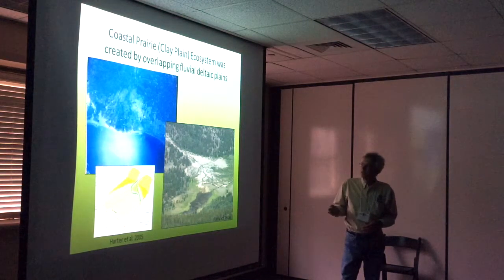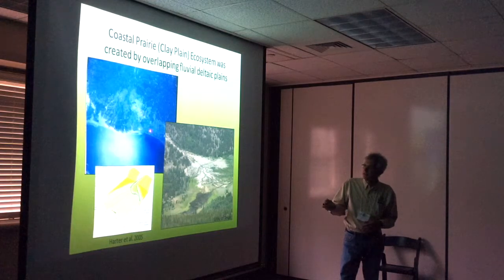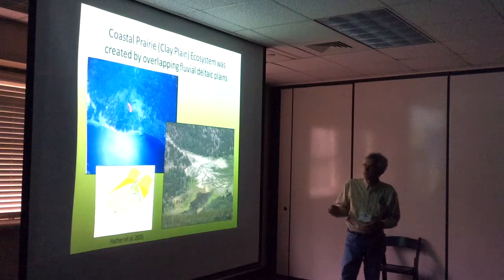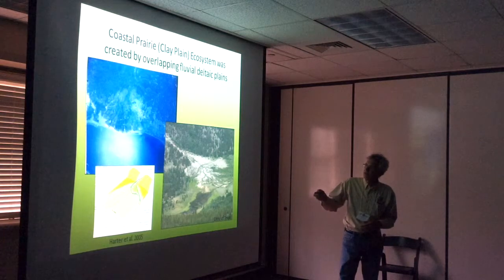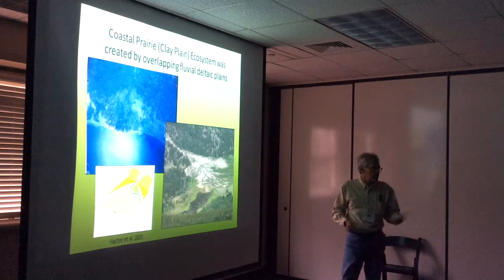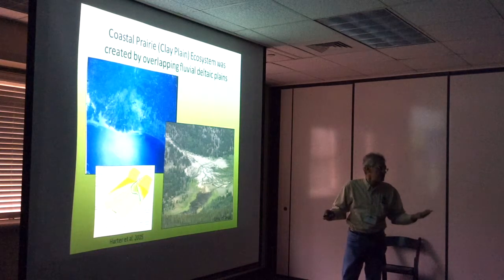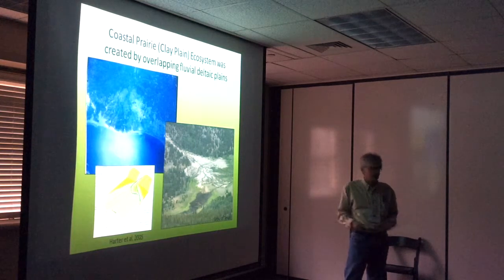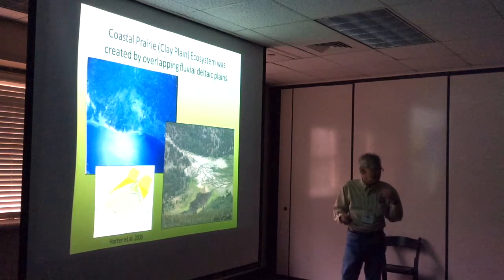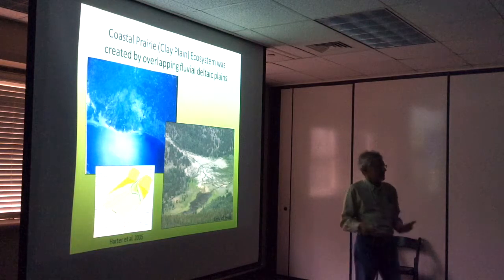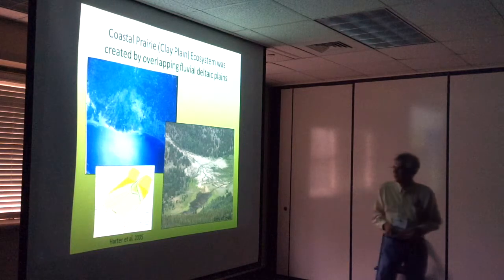Here's Houston and Galveston Bay in an astronaut photo. You can really see how the Brazos comes out of the high area along College Station, hits the flat coastal plain, and forms this delta. You can actually see that from space — it's not something you can easily pick up just driving across the landscape.